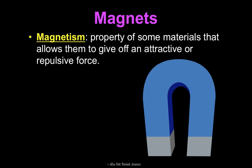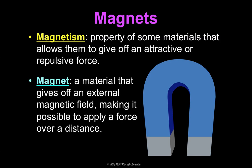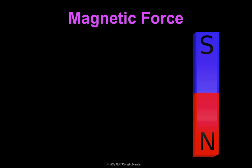What is magnetism? It's a property of some materials that allows them to give off an attractive or repulsive force. A magnet is just a material that has this property. It has an external magnetic field, so it's going to act just like an external electrical field. It makes it possible to apply a force over a distance just like we saw with electric fields. If you've ever held two magnets close together but not touching, you can just feel that attraction. You can feel almost that field that's between them. That's what you're feeling there. You're feeling that magnetic force.